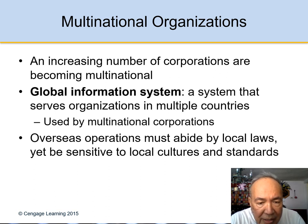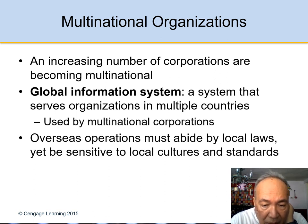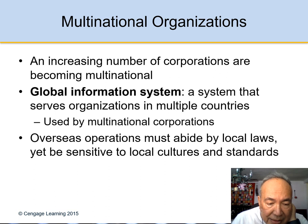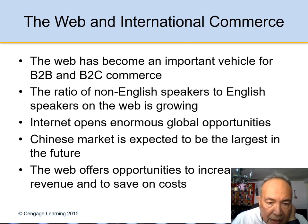Corporations are all over the world right now, and an increasing number are becoming multinational. A global information system is a system that serves organizations in multiple countries, used by multinational corporations. Overseas operations must abide by local laws yet be sensitive to local cultures and standards. Some countries, for example, you cannot even say anything about the government.